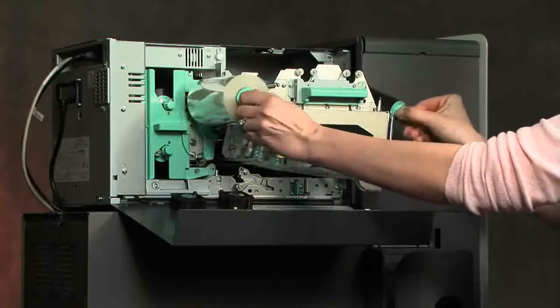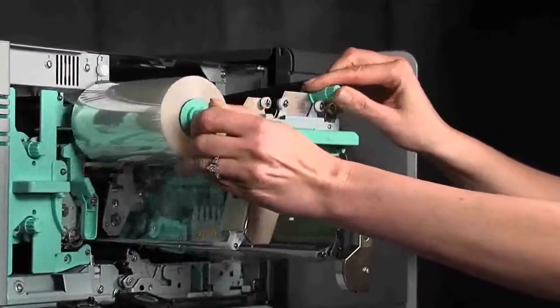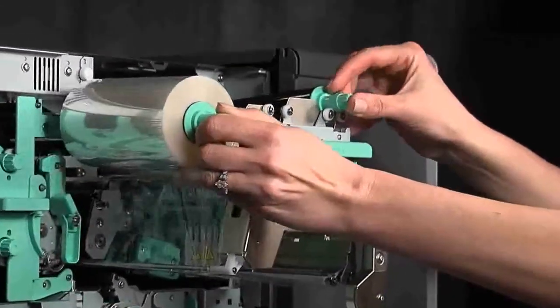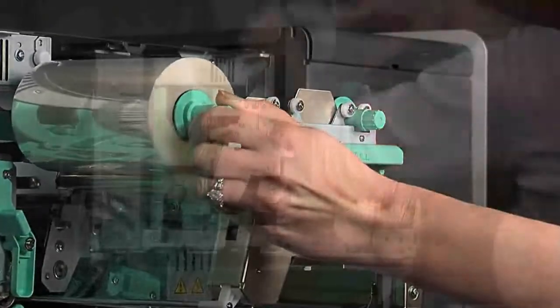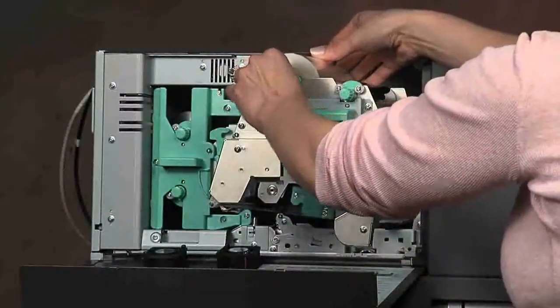Make sure the ribbon is centered, straight, and lays flat. Slide the take-up roll into place. You should feel a click when the roll snaps into the carrier. Do the same thing on the left side with the supply roll.